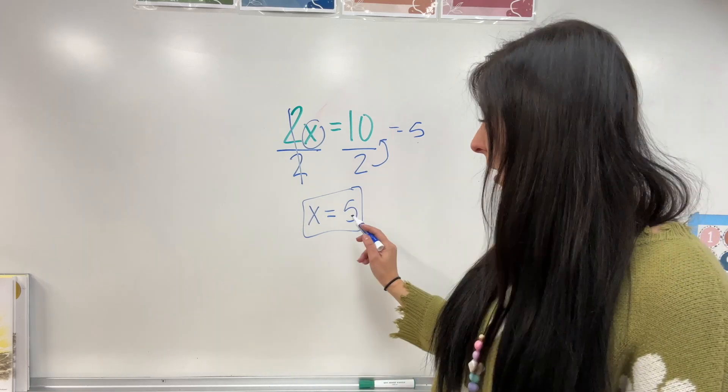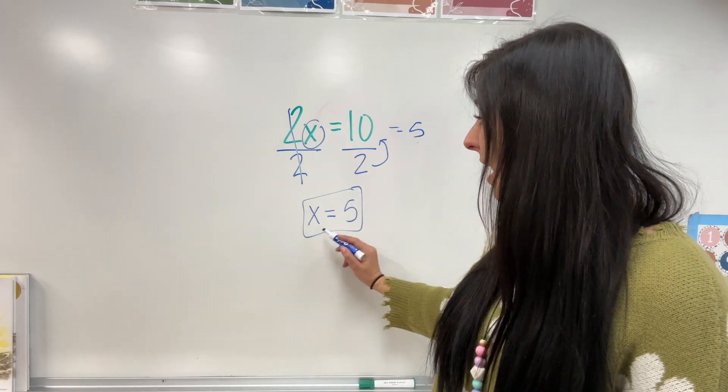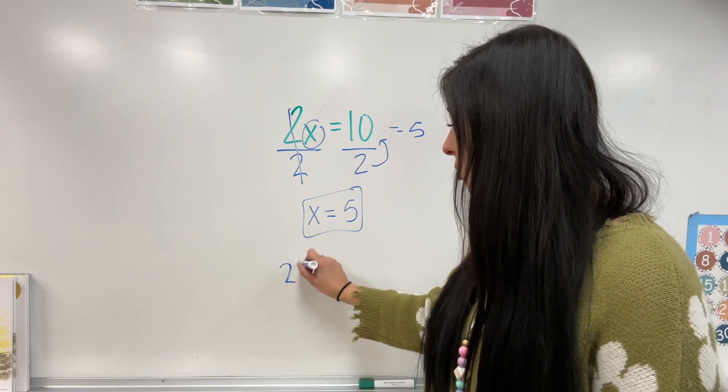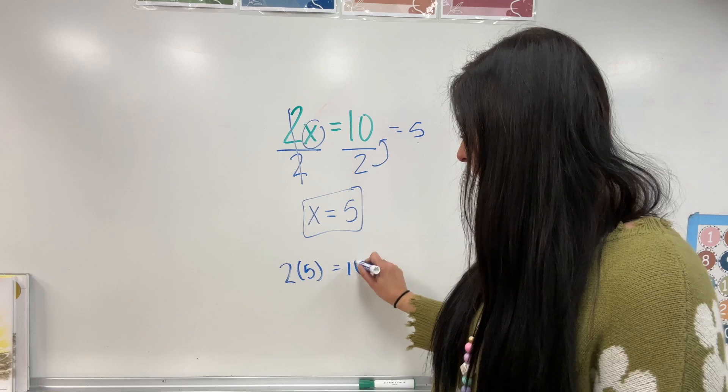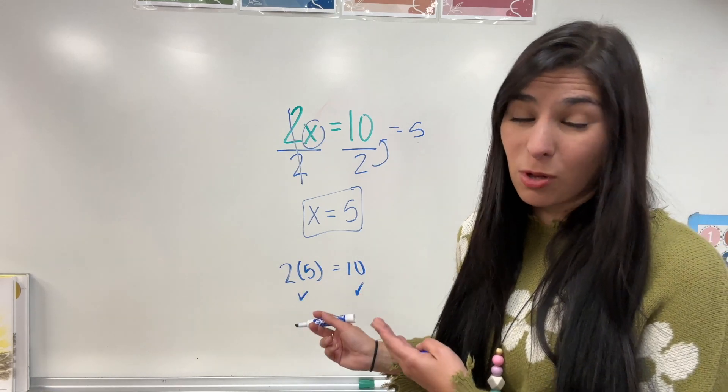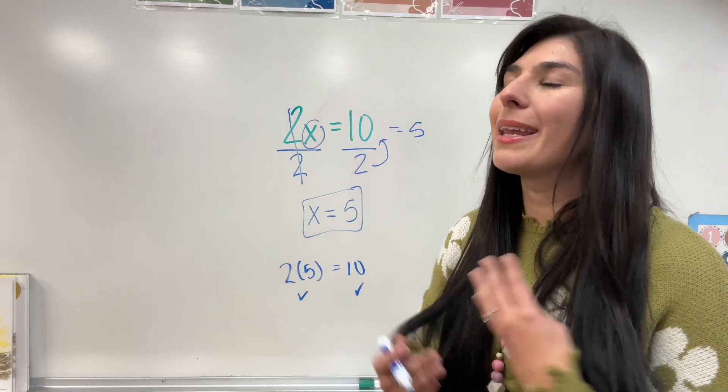Now, we can double check this by plugging that 5 back in, because it's saying if x equals 5, this should equal 10. Does 2 times 5 equal 10? Yes. Both of those have to be equal on both sides in order for it to be equal, meaning it is correct.